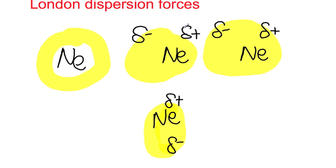London dispersion forces don't just happen with noble gases — they occur with all covalently bonded molecules as well. It is purely the movement of electron clouds creating a dipole and then inducing a dipole in the neighboring atom or molecule. The resulting attraction between positive and negative charges can hold them slightly closer together.